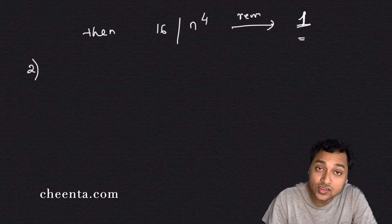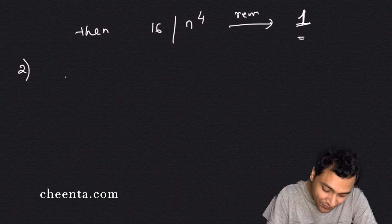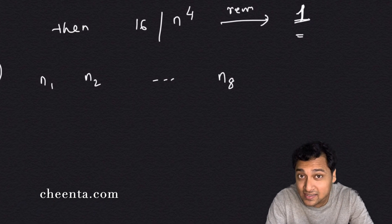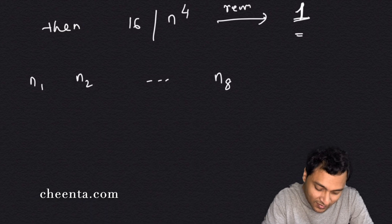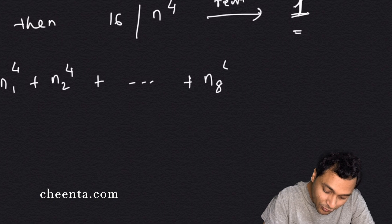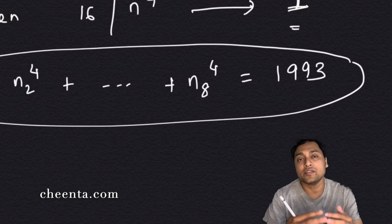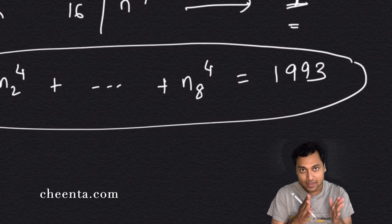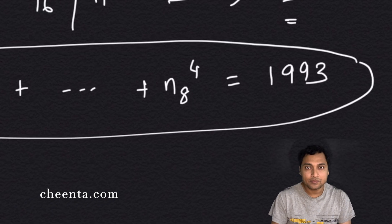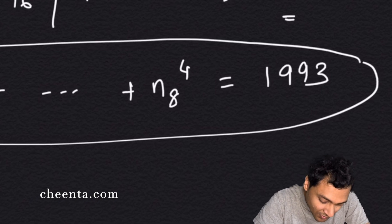The second part of the question is: hence or otherwise show that if n1, n2, up to n8 are 8 integers, then the sum of their fourth powers — n1 raised to 4 plus n2 raised to 4 up to n8 raised to 4 — can never equal 1993. This particular fourth-degree equation has no integer solutions. That's the second part of the question.